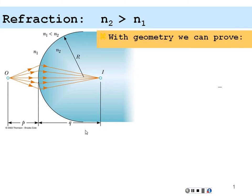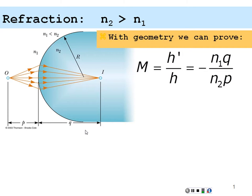With a little bit of geometry we can prove that the magnification of our image in relation to our object — the image height H prime over the object height H — will be equal to negative index 1 over index 2 times the image distance over the object distance.